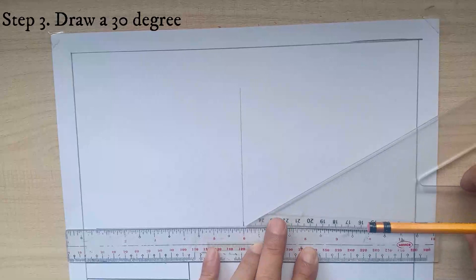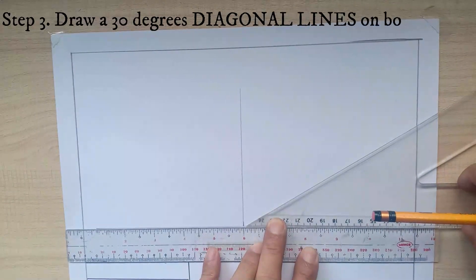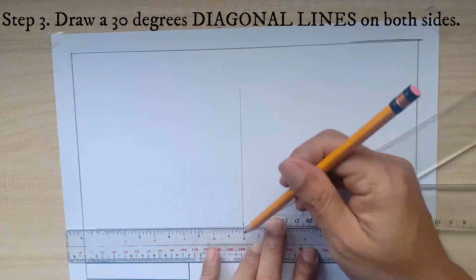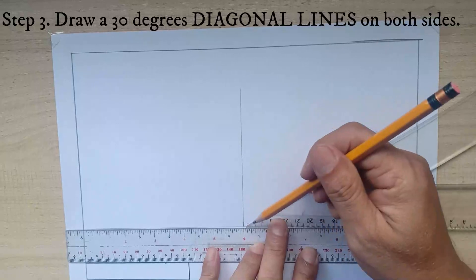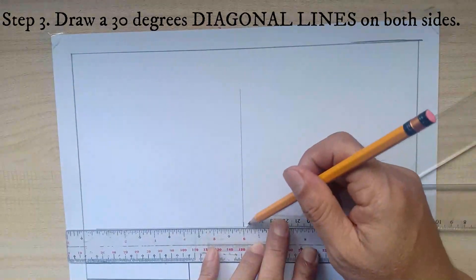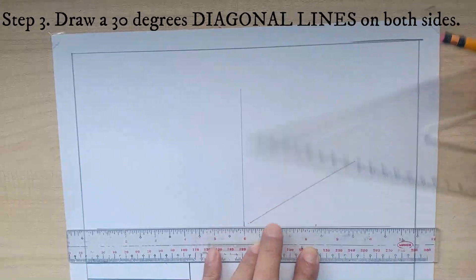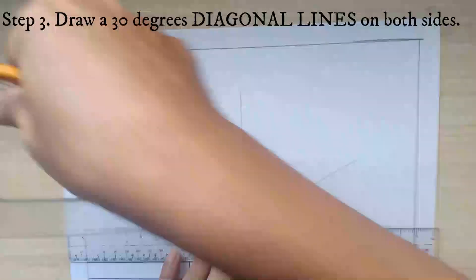The next step is to draw a 30 degrees diagonal line on both sides of the drawing. You can use your 30 by 60 triangle and your ruler in making the line.